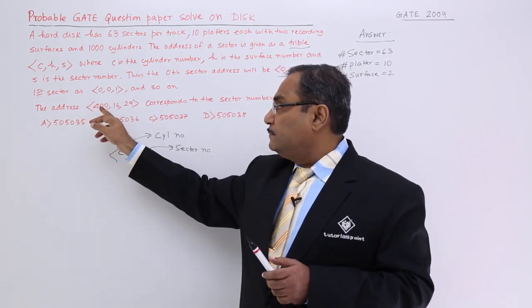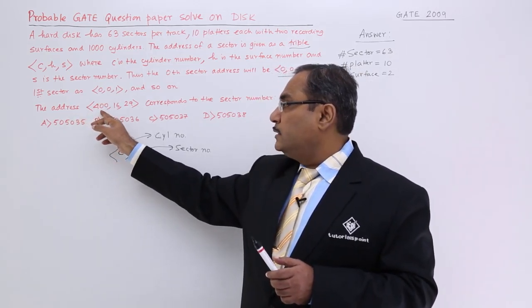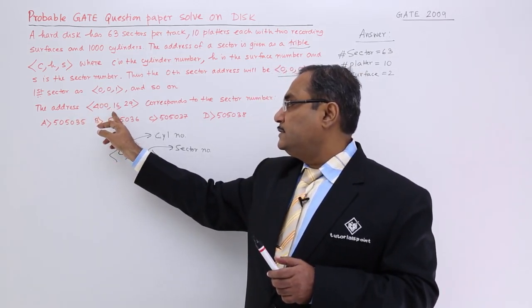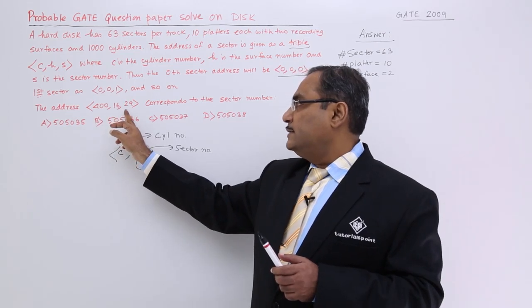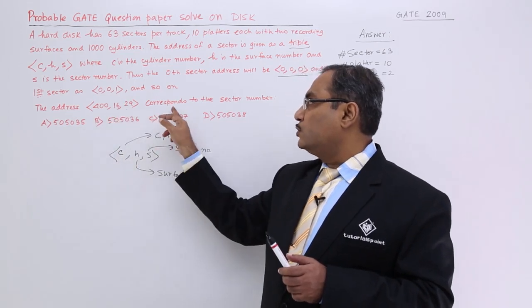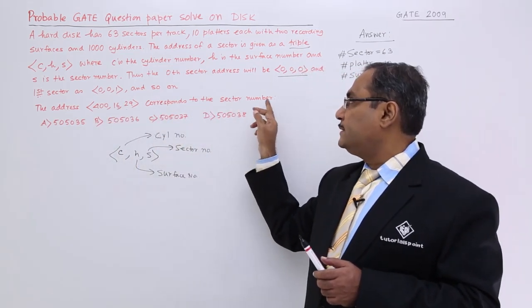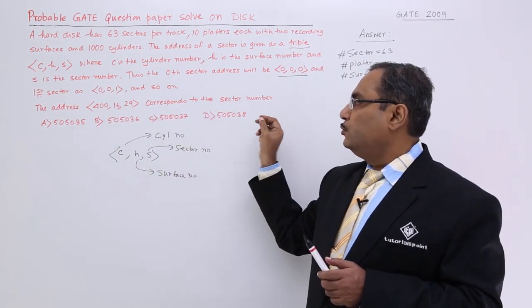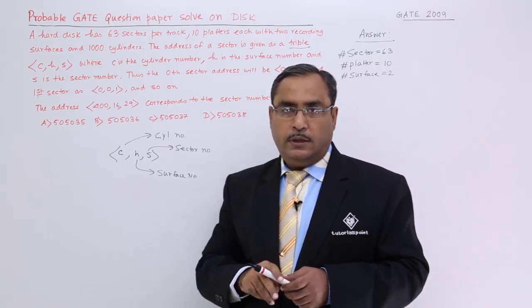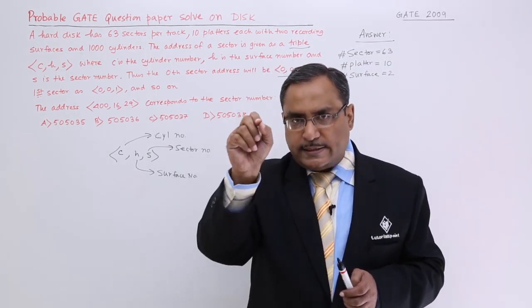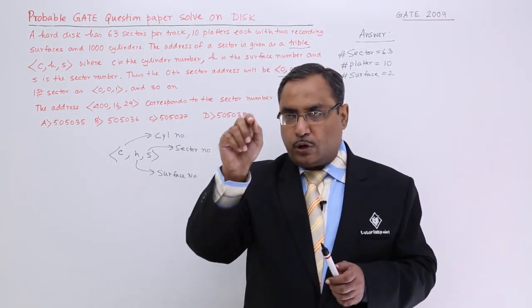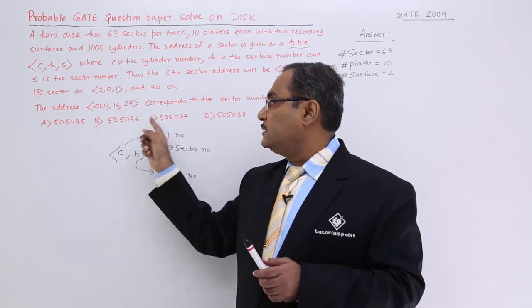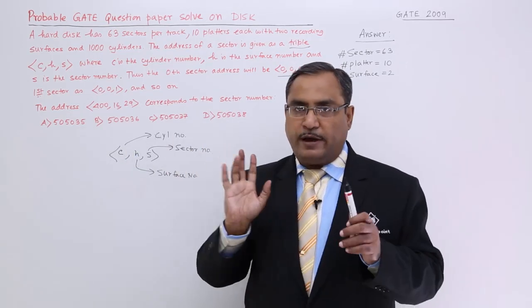The address (400, 16, 29) has cylinder number 400, surface number 16, and sector number 29. We need to find which block number — which overall sector number — this corresponds to.